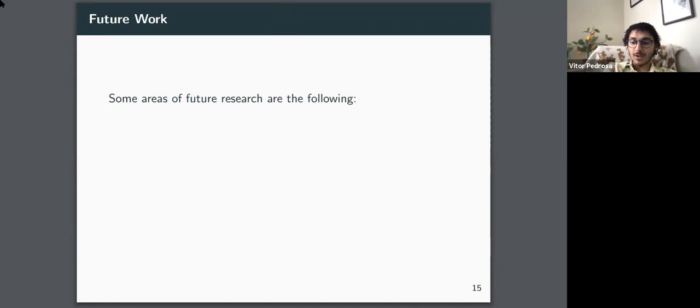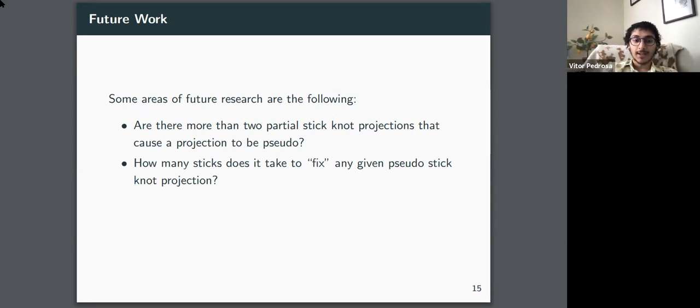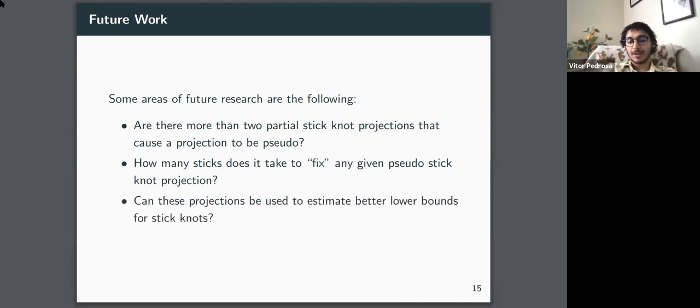So even though we accomplished a lot through our research, there are still some questions that remain. The first question is, are there more than two pseudo-stick knot projections that cause the projection to be pseudo or two partial-stick knot projections? We only found two throughout our research, but there could be more. Second question is, how many sticks does it take to fix a pseudo-stick knot projection? So we know there's a break that occurs, but how many sticks do we need to throw at it to make it not break or to fix the break? And how can fixing these projections help us find better lower bounds for stick knots? So we know for the trefoil it's six, since five creates a pseudo-projection, so how many sticks we need to add to our pseudo-projection could cause it to be non-pseudo anymore. This could help us find better lower bounds for our sticks.